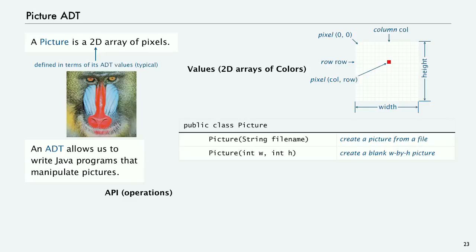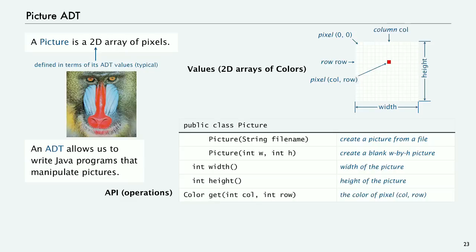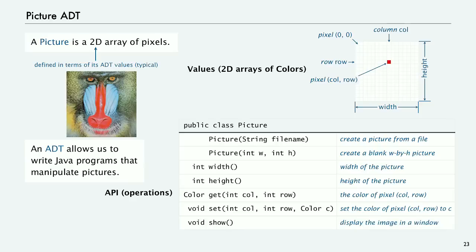We could also create a blank one. And then we can ask for properties of the picture like its width and its height. We can ask for the color of a particular pixel given a column and row, as long as the column index is within the width and the row index is within the height. And we can also set the color of a pixel to be some other color. And then the other thing we can do is just display the image in a window like standard draw.